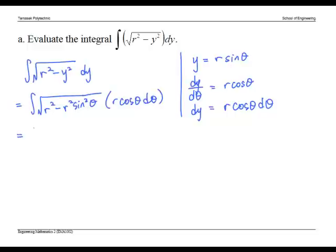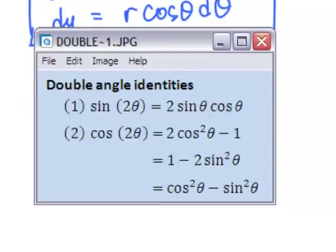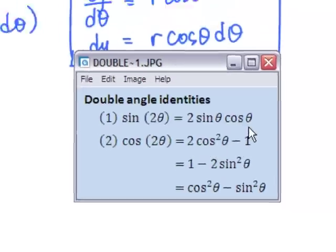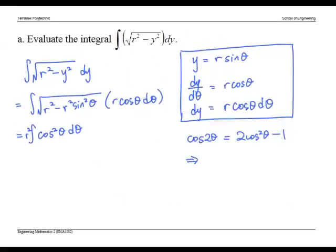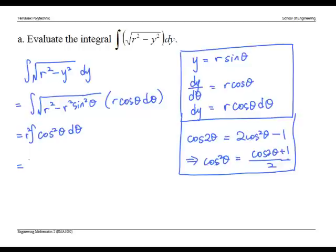Simplify the expression. Now to evaluate the integral of cosine squared theta, consider the double angle identity: cosine 2 theta equals 2 cosine squared theta minus 1. Therefore, cosine squared theta equals cosine 2 theta plus 1 divided by 2. We replace it in the integral. This is much easier to integrate.